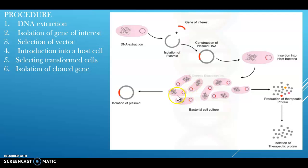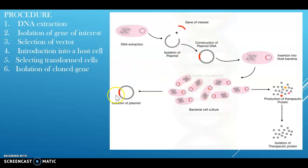The transformed cells are grown under strict aseptic conditions in the correct culture media to avoid contamination and the chance of culture failure. They must be cultured for 72 hours at 37 degrees Celsius. After culturing of the transformed cells, the cloned gene must be isolated from the cultured cells.